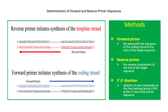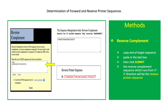Thus, the reverse primer sequence should also be designed in the 5' to 3' orientation. Generate the reverse complement of the coding strand at the end of the target gene to get the reverse primer sequence.